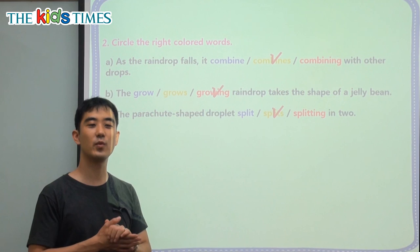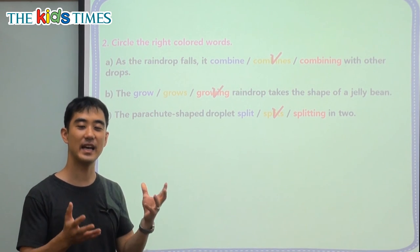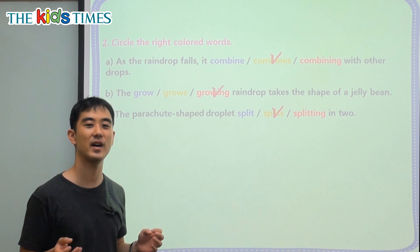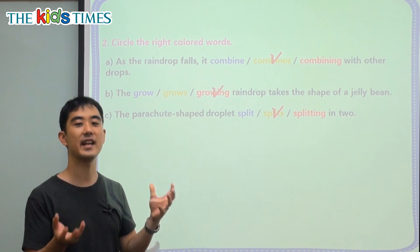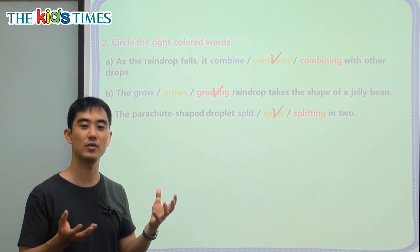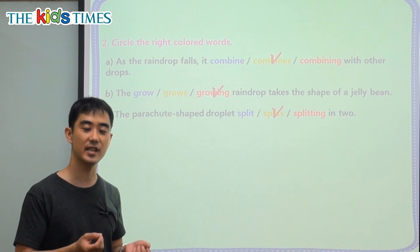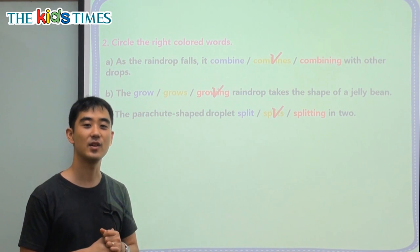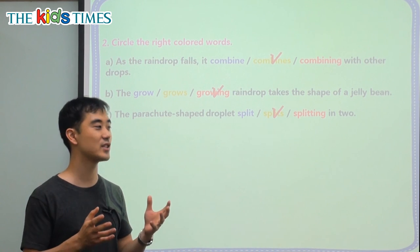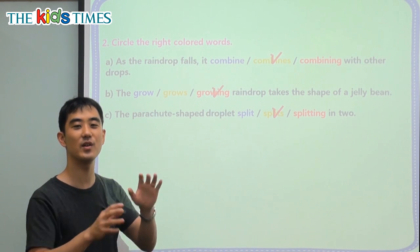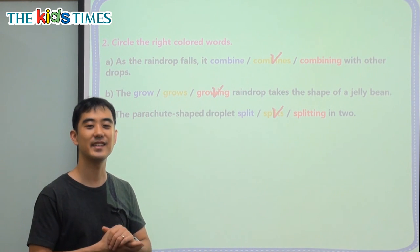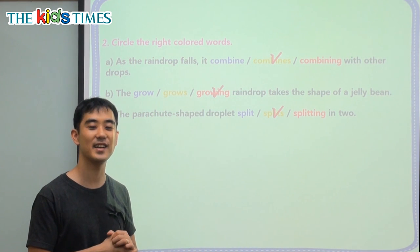I know that we all see rain and everyone has seen rain, but not a lot of us really think about how dynamic or how different each single raindrop is. Every raindrop is unique. So next time you see some rain, really try to see on the window the different shapes and the different sizes. Thank you for joining us today for Kids Times. I'll see you next time. Bye.